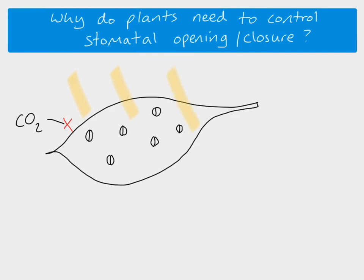If there's sunlight then obviously the plant is going to want to be able to do photosynthesis, in which case the plant needs carbon dioxide. So if there's sunlight the plant would aim to open the stomata so the carbon dioxide can go in.